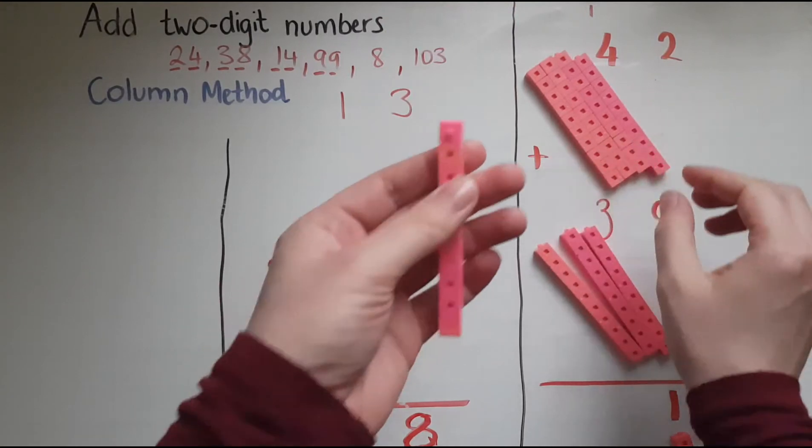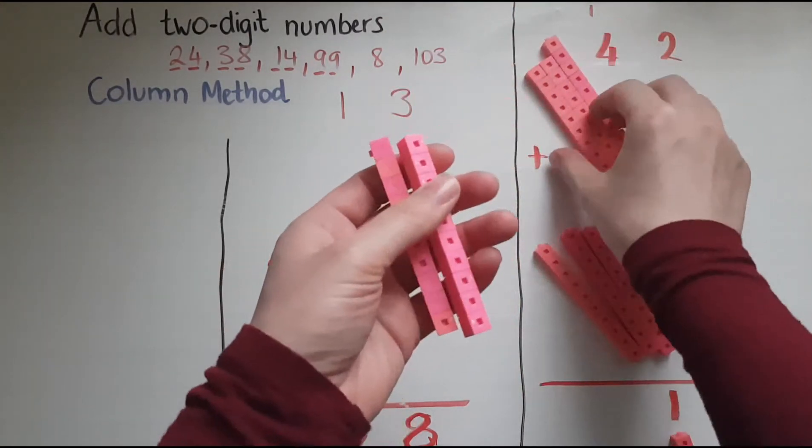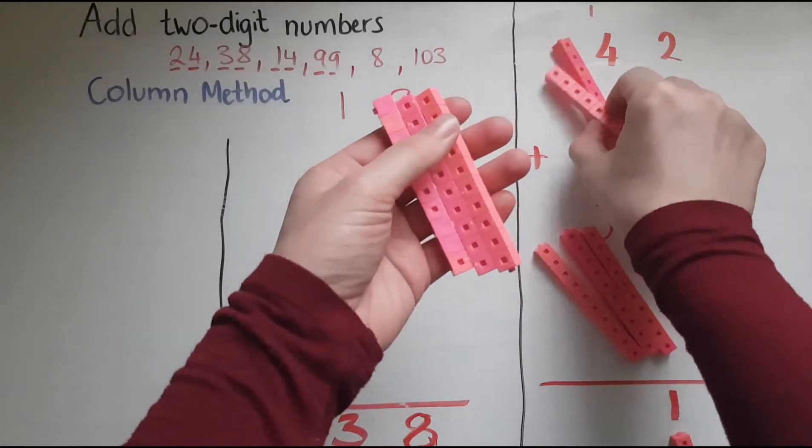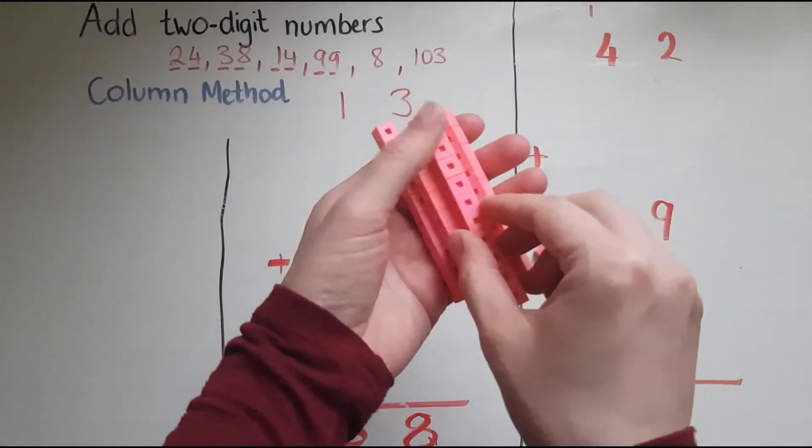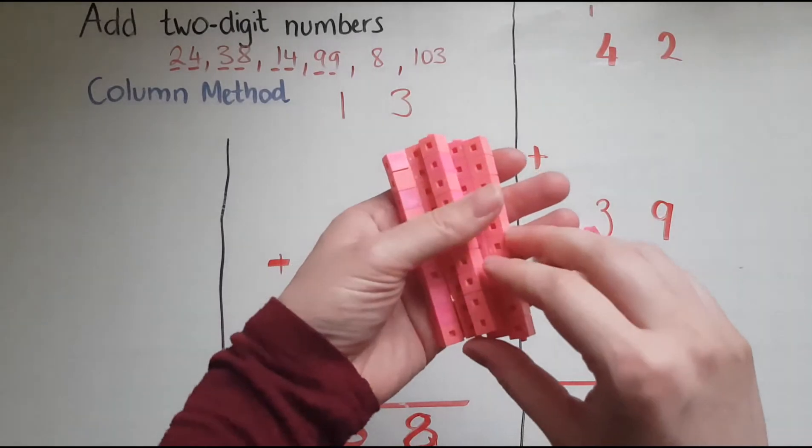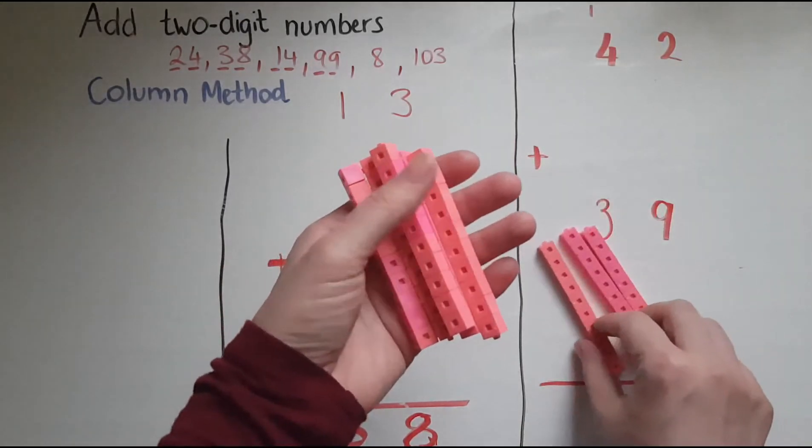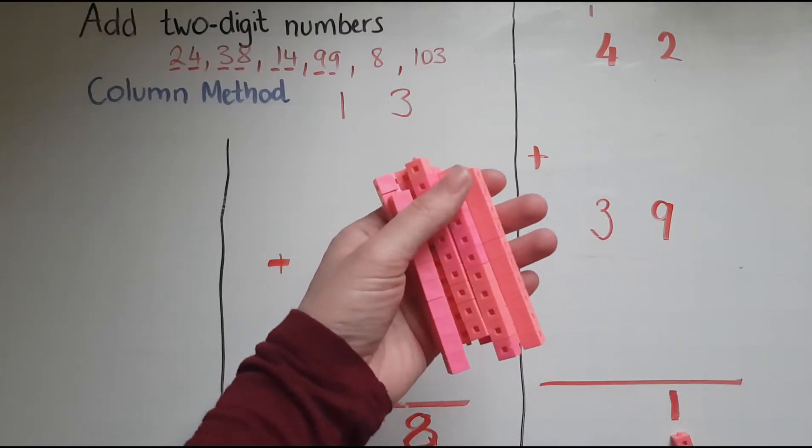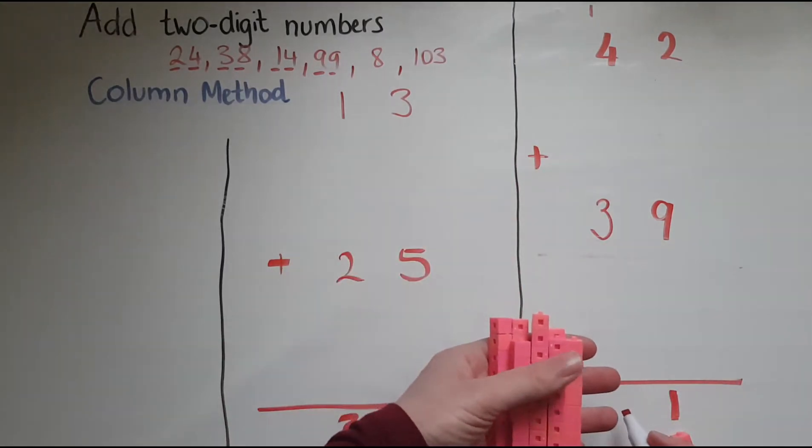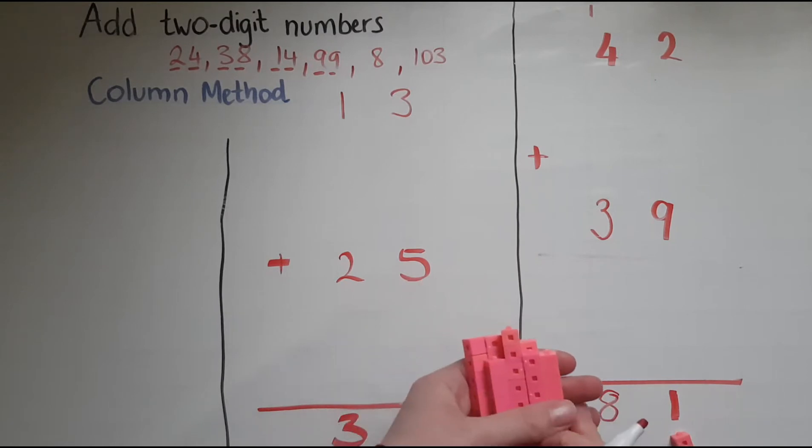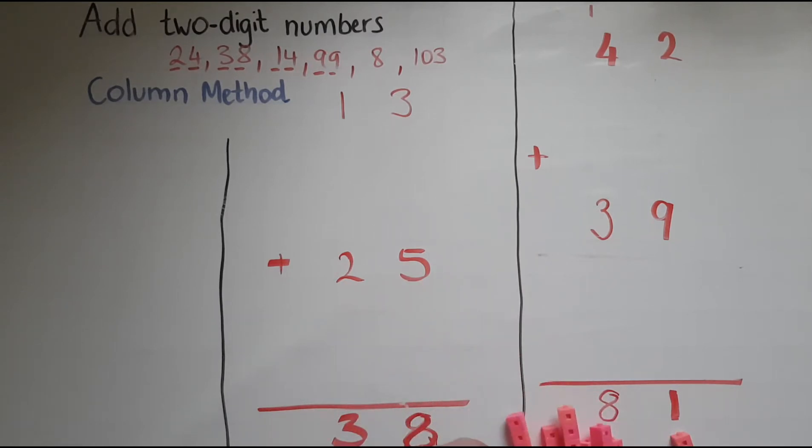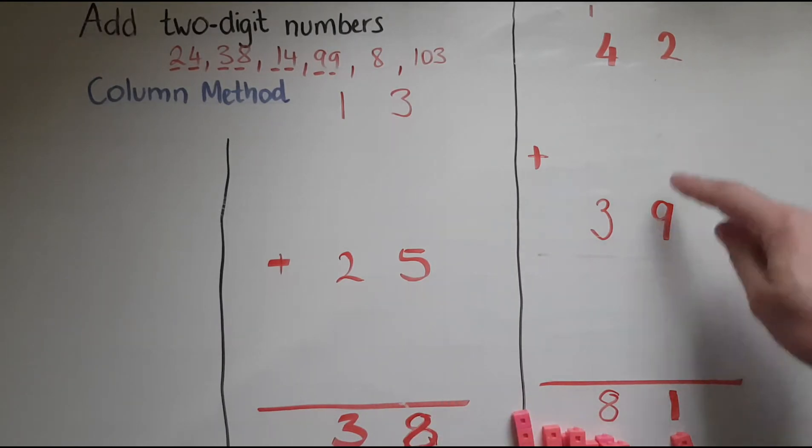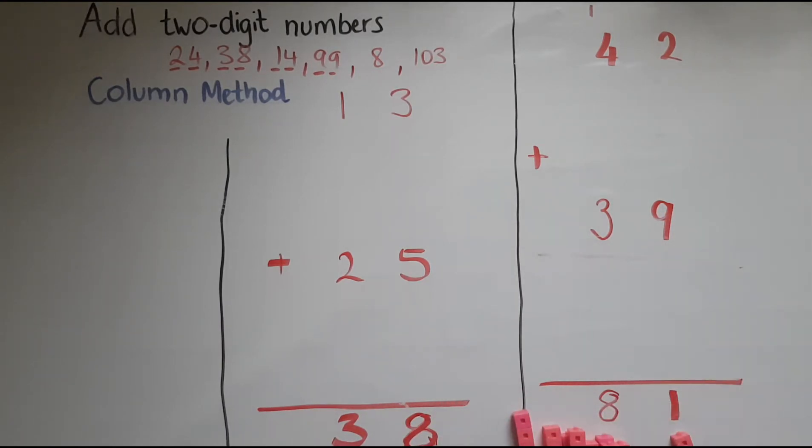So let me count. I've got 1, 2, 3, 4, 5, 6, 7, 8. So this is represented by the 8 here. So altogether 42 and 39 makes 81.